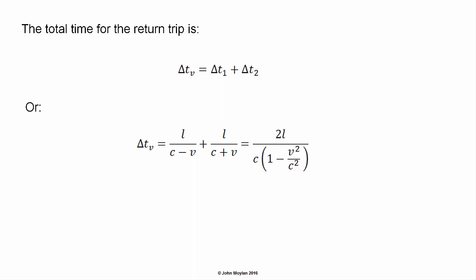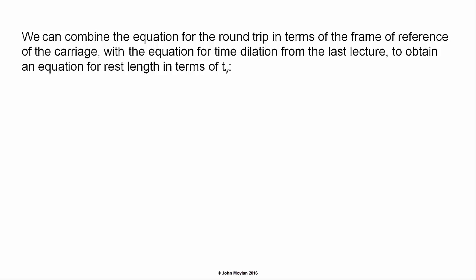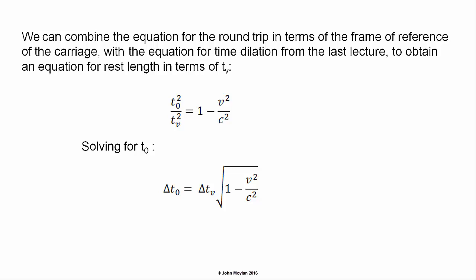We can combine the equation for the round trip in terms of the frame of reference of the carriage with the equation for time dilation from the last lecture to obtain an equation for the rest length in terms of T subscript V. T subscript 0 squared over T subscript V squared equals 1 minus V squared on C squared. Solving for T subscript 0, we get T subscript 0 equals delta T subscript V multiplied by the square root of 1 minus V squared on C squared.